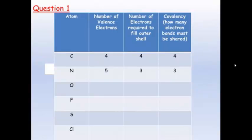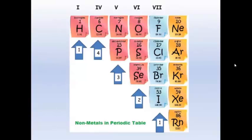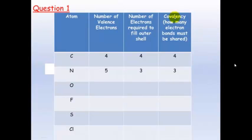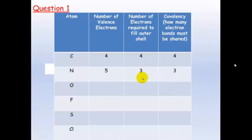Question one asks about the atom symbol and the number of valence electrons, which we find by looking at the periodic table. Carbon is in group four so it has four valence electrons, and therefore needs four more electrons to fill its outside shell, meaning it will form four covalent bonds. Nitrogen has five valence electrons so it needs three more to fill its outside shell, forming three covalent bonds. You should be able to fill out the rest.